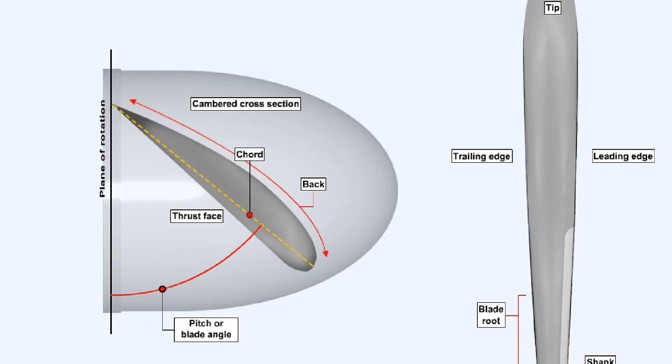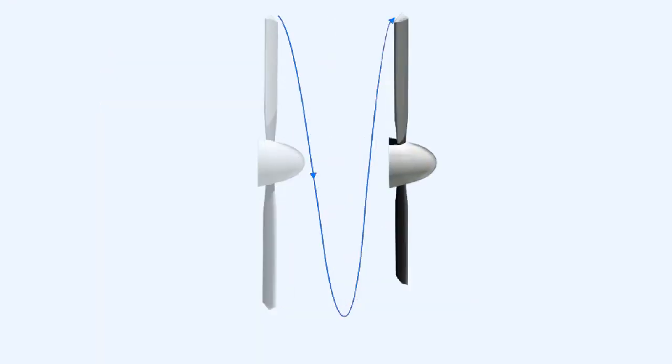The propeller blade is set into its hub so that its chord line forms an angle with the plane of rotation of the whole propeller. This is called either the pitch or blade angle. The theoretical distance, ignoring slippage, that a propeller or propeller blade moves forwards when the propeller shaft has completed one rotation, is called the geometric pitch.